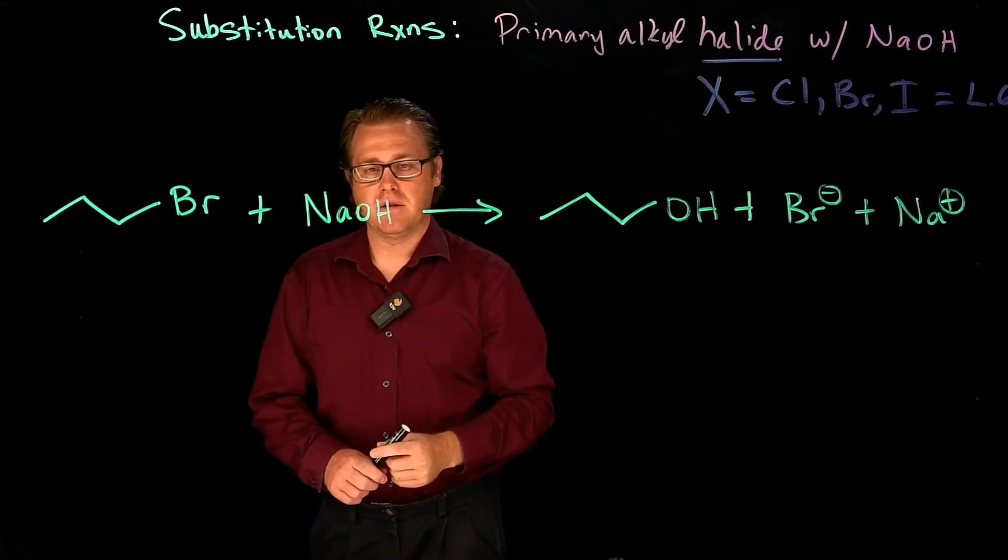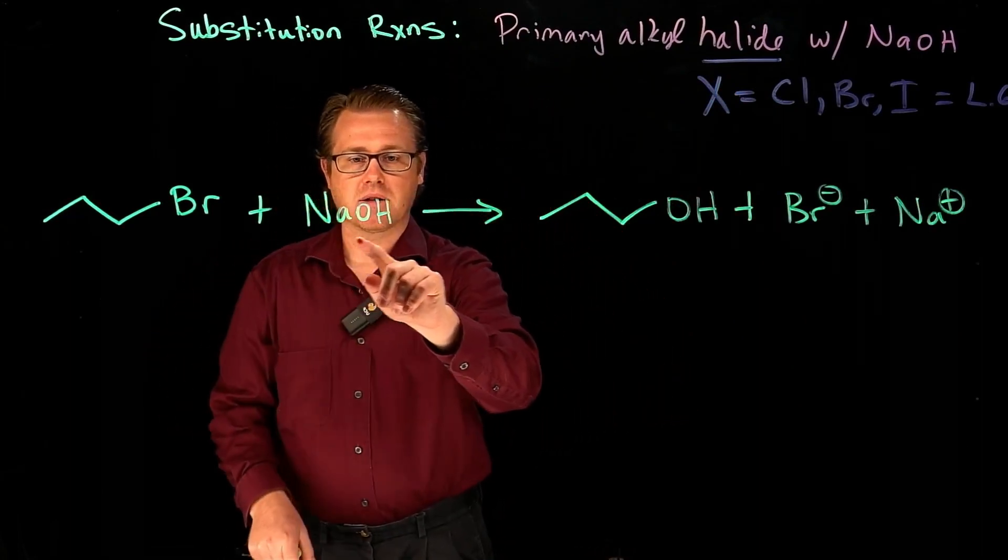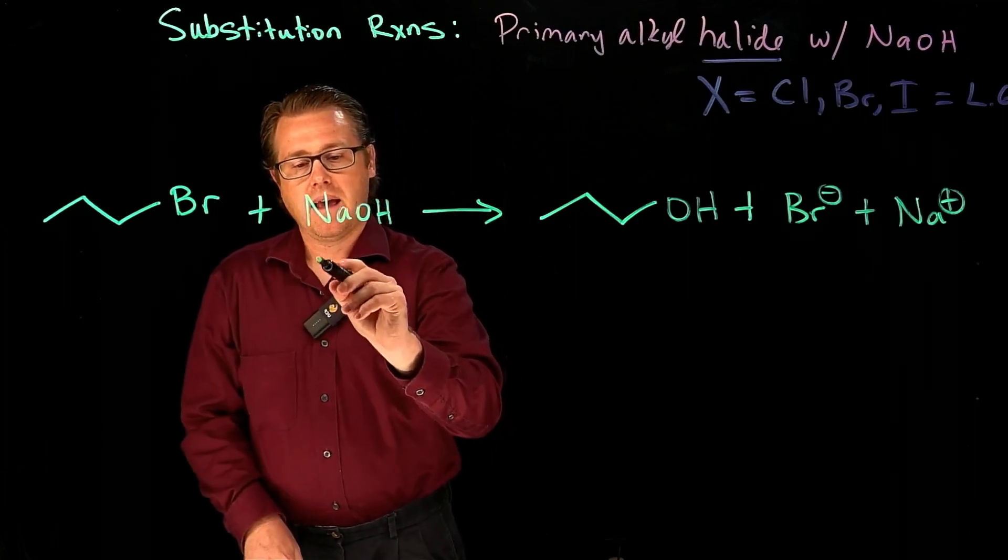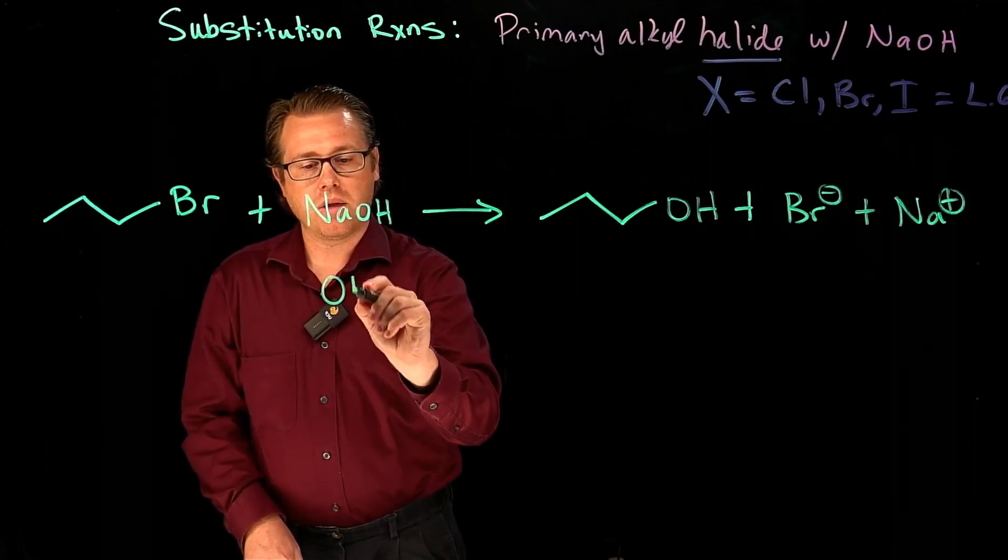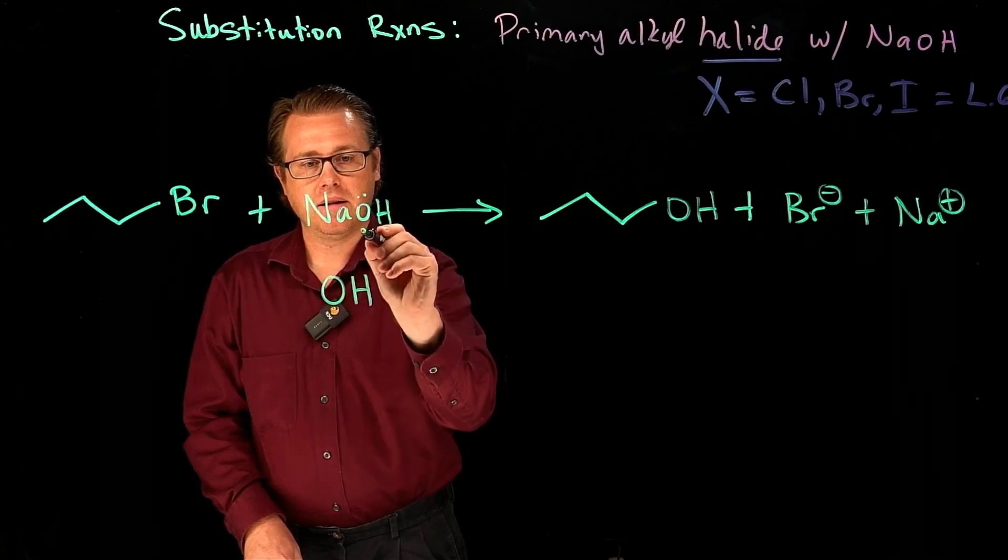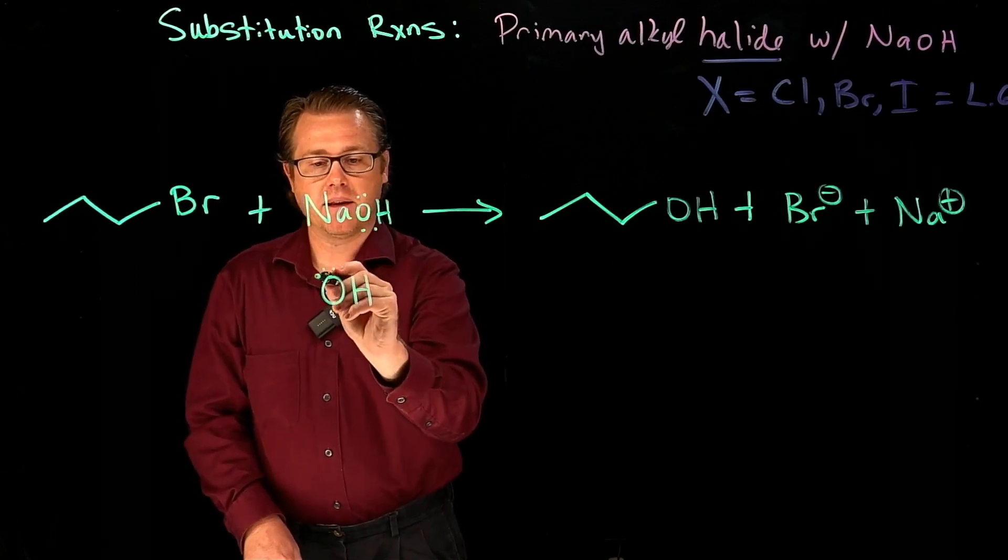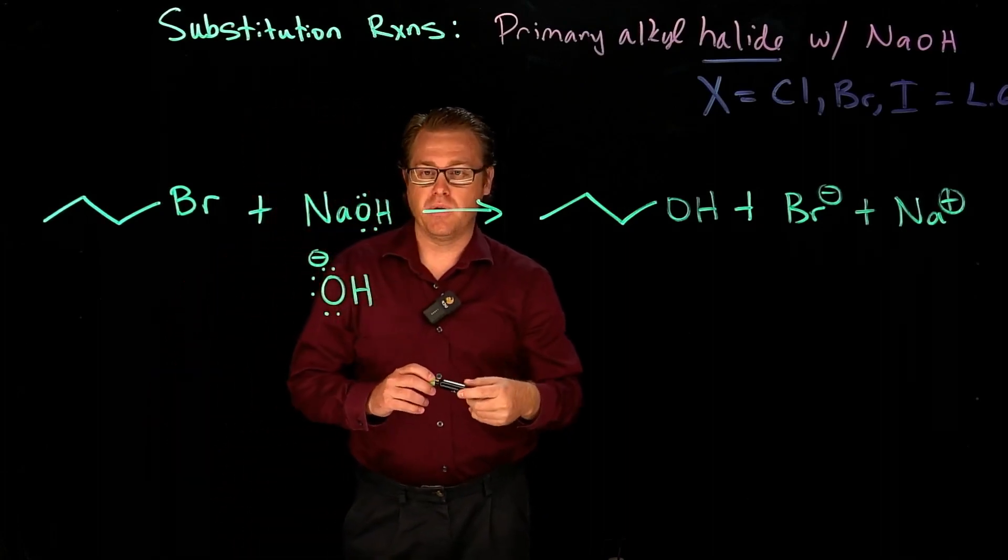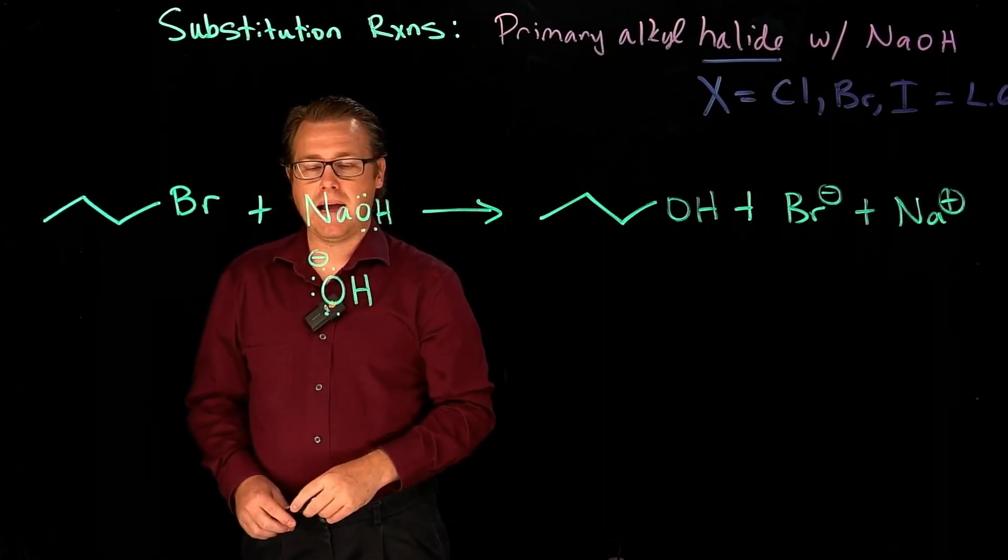Now mechanistically, when you take a look at this, we have to realize that our sodium hydroxide is an ionic species. And so all that we're interested in is the anion, because that's the electron-rich species that's going to do the substitution reaction.